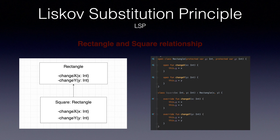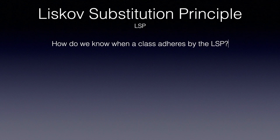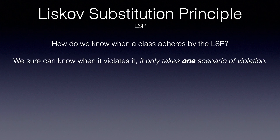Maybe it's an editing software, like paint, and dragging on the edge of the rectangle should never change the other dimension. That hopefully gave us an idea. But how do we know if a subclass follows the Liskov substitution principle? We can understand when a class violates it — it only takes one scenario where a subclass cannot replace a parent without breaking the existing code.